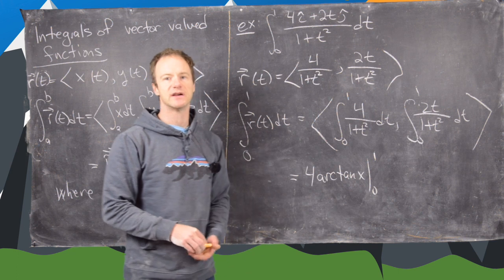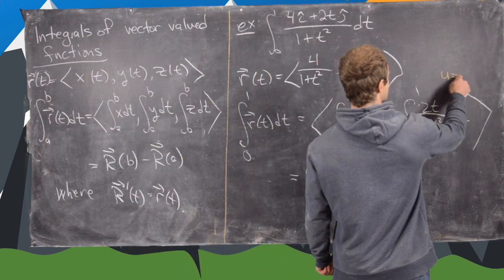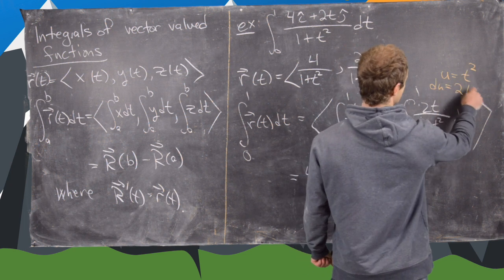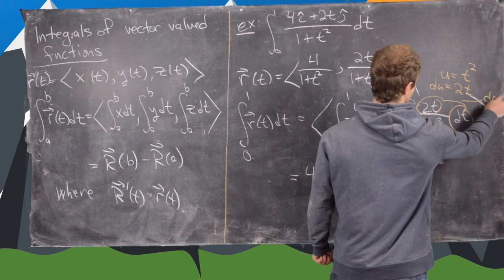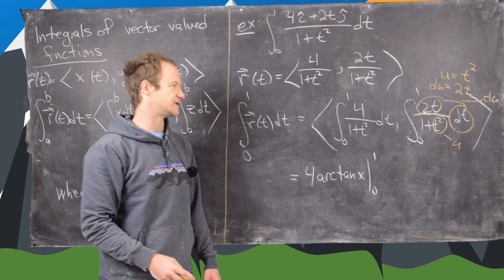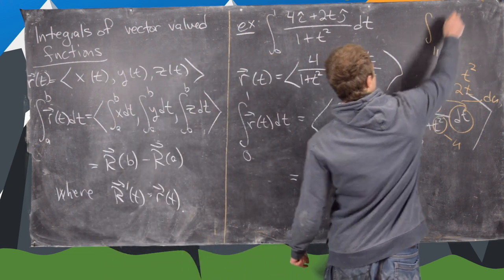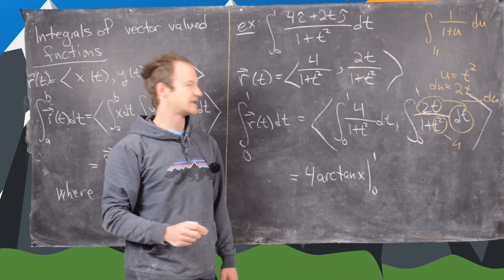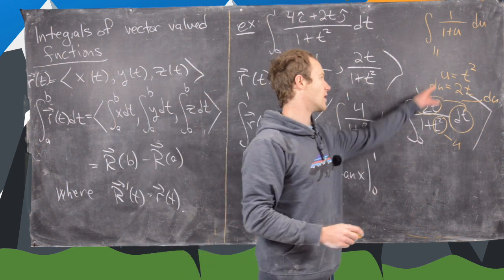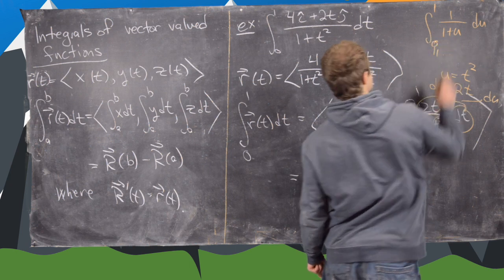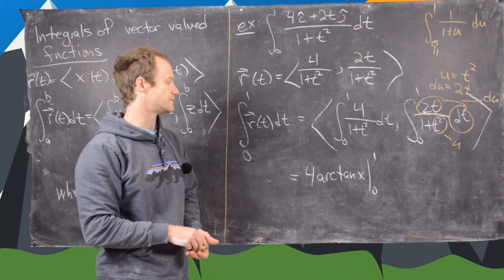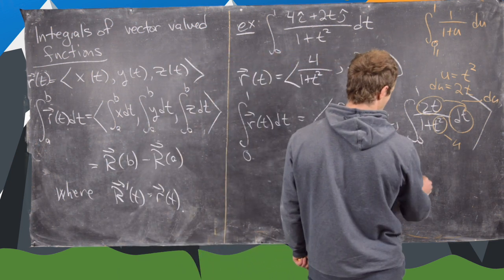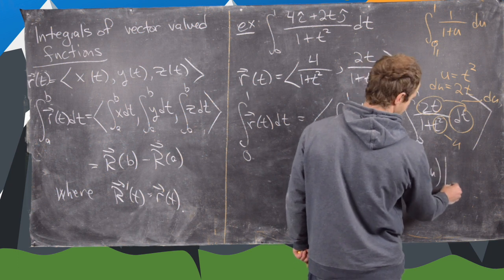The next one is a little more tricky, but if we take a u-substitution with u equals t squared, that makes du equal to 2t dt. Notice our du term is in the numerator, and our denominator is 1 plus u. So that changes this integral to the integral of 1 over 1 plus u du. For the bounds: when t equals 0, u is also 0, and when t equals 1, u is also 1. So the antiderivative gives us natural log of 1 plus u evaluated from 0 to 1.